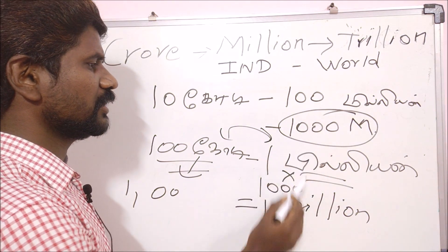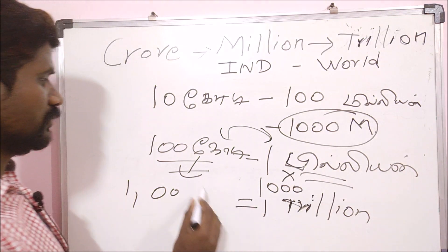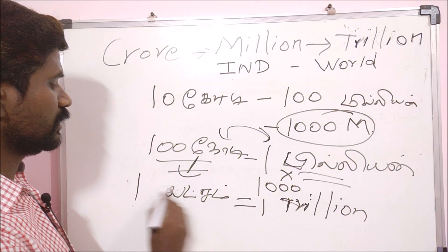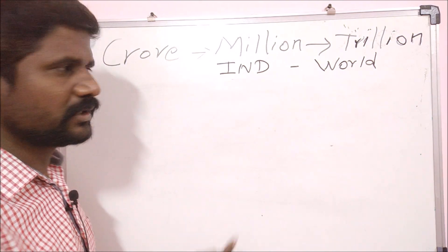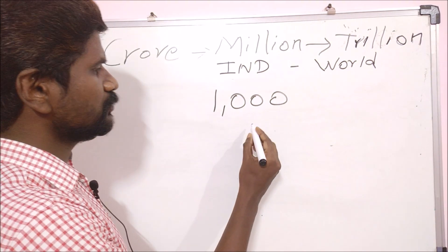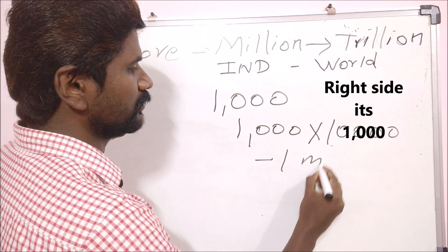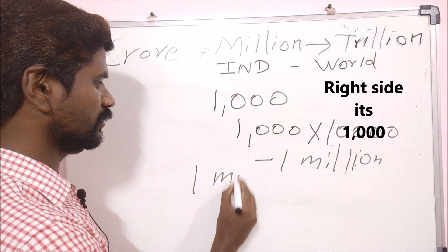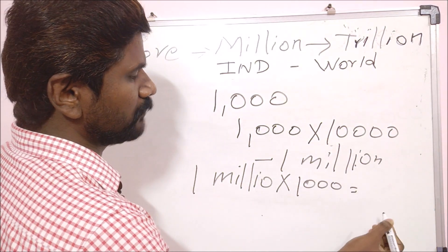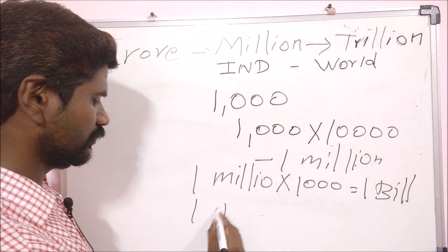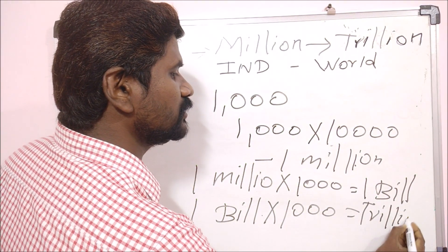So this is 1 million. If you look at the Indian number system, the number is important. 1 billion multiplied gives 1 trillion. So 1 trillion is 1,000 billion. This is the Western number series — the number system is very important. 1 trillion is 1 followed by 12 zeros: 1,000,000,000,000.